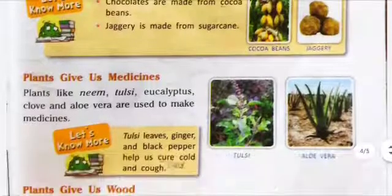Now moving to the book exercise. Question 1: Tick the correct answer. Number 1 — Wheat, rice, and maize are examples of cereals. Number 2 — Pan is not obtained from plants because pan is a man-made thing. Number 3 — Fibers from the cotton plant are used to make cloth.